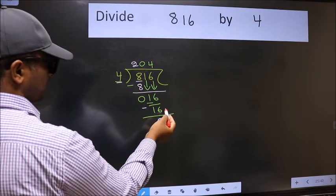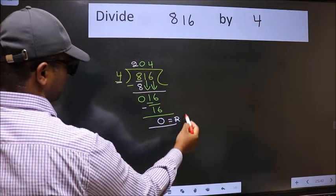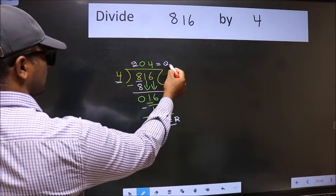No more numbers to bring it down. So we stop here. This is our remainder and this is our quotient.